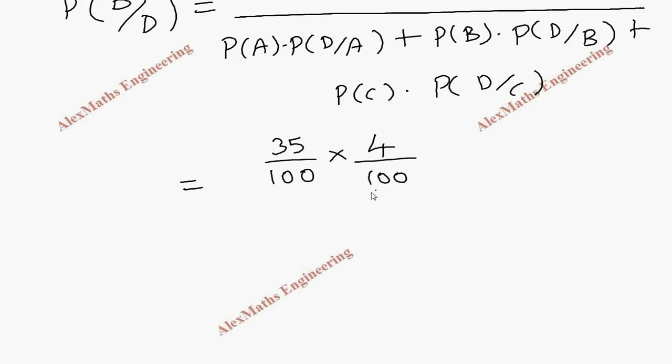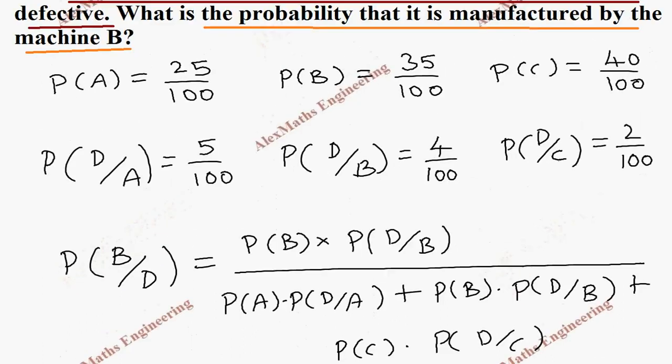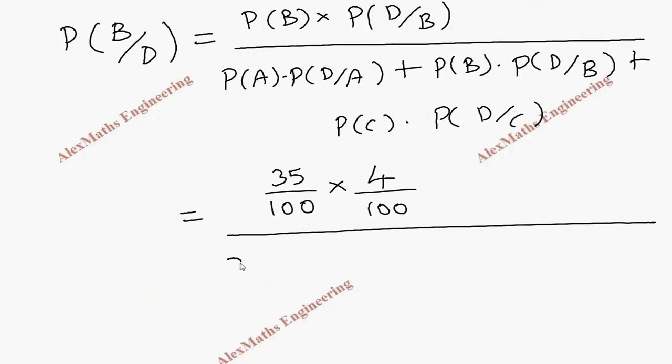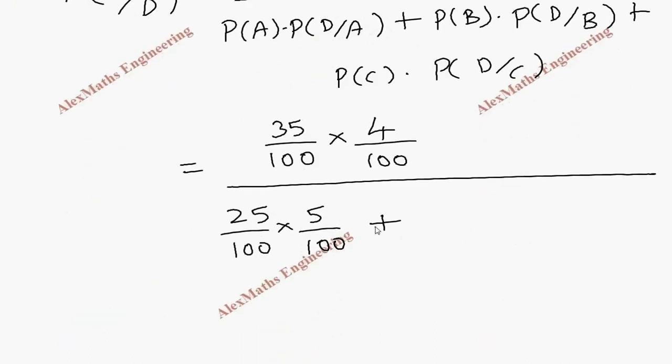So, 4 by 100, divided by P(A) which is 25 by 100 and its defective probability is 5 by 100. And, once again, we have to copy the numerator.